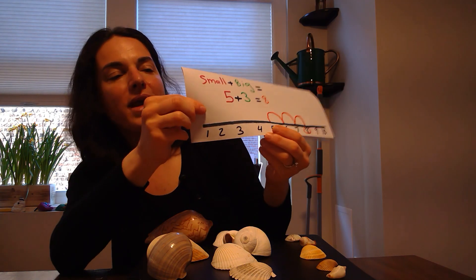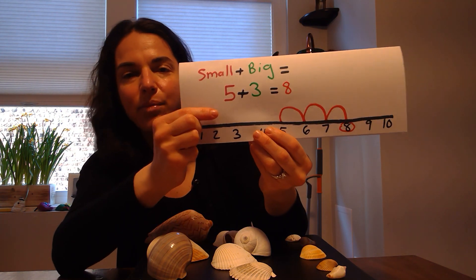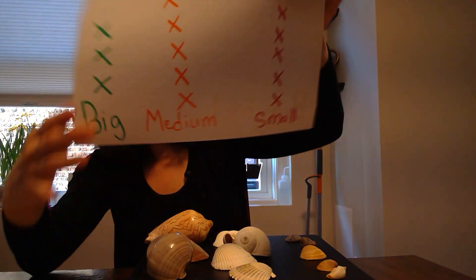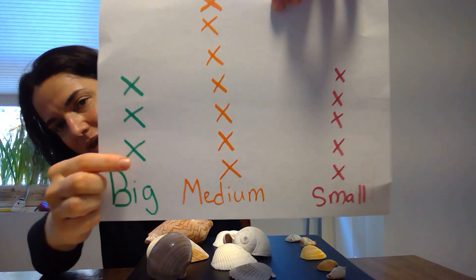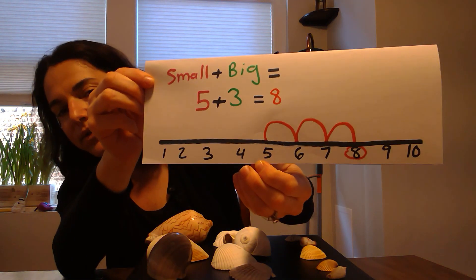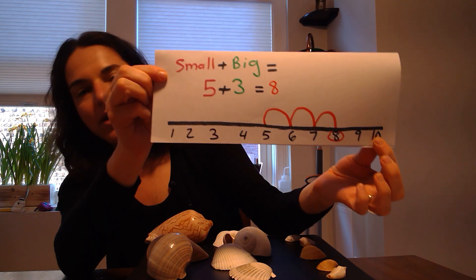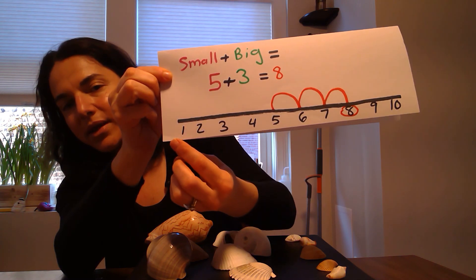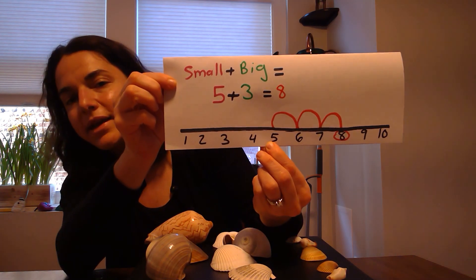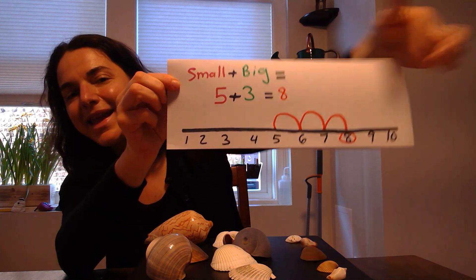Then I wanted to see how many shells I have if I add the group with the small shells to the group with the big shells. Again, I wrote a number sentence to help organize my thinking: 5 plus 3. So 5 small shells plus 3 big shells. To solve this problem, I decided to use a different math model. I decided to use a number line. I found number 5 on my number line. And since I'm adding, I went to greater numbers on my number line, instead of going to numbers that are fewer. So I started at 5, and since I'm joining a group of 3, I needed to do 3 jumps. 1, 2, 3, and I landed on number 8.